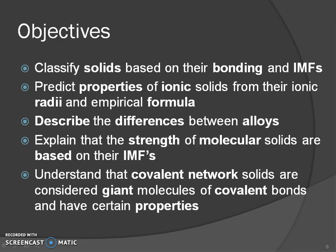Your objectives for this chapter will be to classify solids based on their bonding — which you've already done in Chem 1 — but we're also going to include the IMFs you just learned. You'll have to predict properties of ionic solids based on their ionic radii and empirical formula. And describe the difference between alloys, of which there are two types.